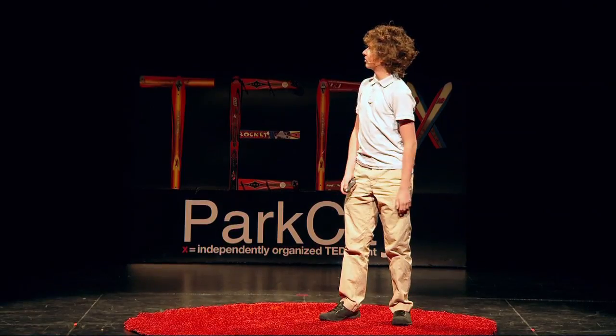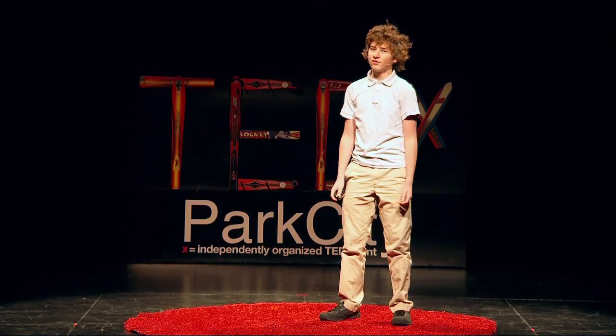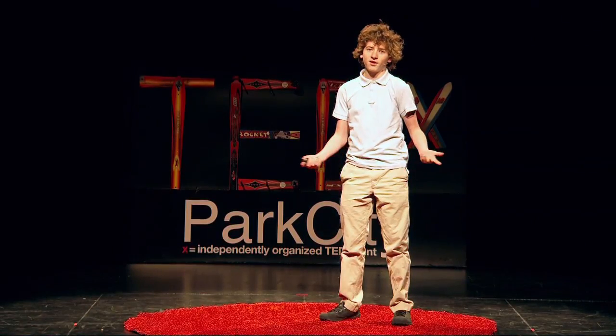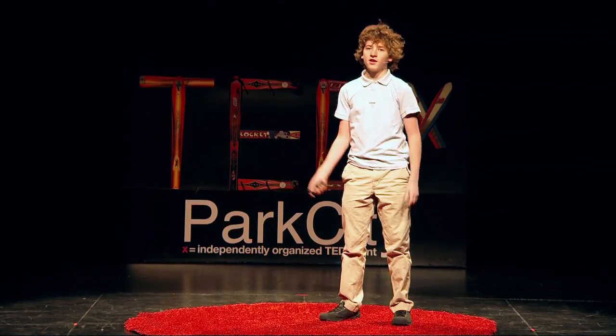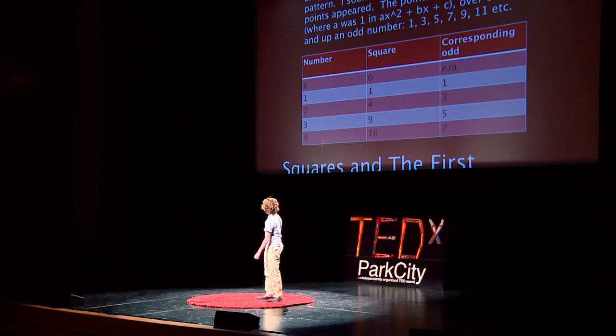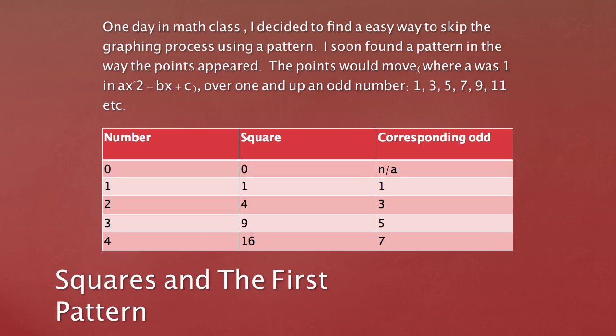So I was in math class one day and I wanted to figure out how to graph them faster, because math has patterns. I took numbers and squared them, because it's y equals ax squared and it moves exponentially. I took a number, squared it, started subtracting, and found a pattern: if you take a square and subtract the previous square, you get an odd number, which I call the corresponding odd number — it probably has a name, but I don't know it.